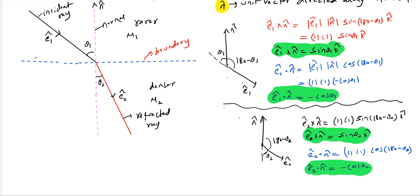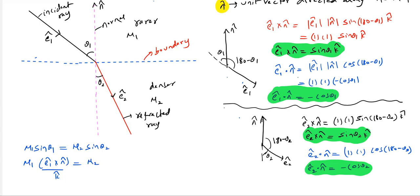What is the basic Snell's law? It says μ₁ sin θ₁ = μ₂ sin θ₂. We can write sin θ₁ as the magnitude of Ê₁ × n̂ divided by K̂. We have substituted: sin θ₁ = |Ê₁ × n̂| / K̂. Similarly, μ₁ (Ê₁ × n̂) / K̂ = μ₂ (Ê₂ × n̂) / K̂, so K̂ gets eliminated.